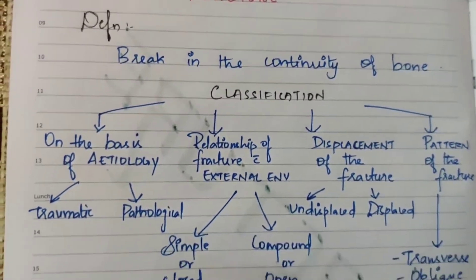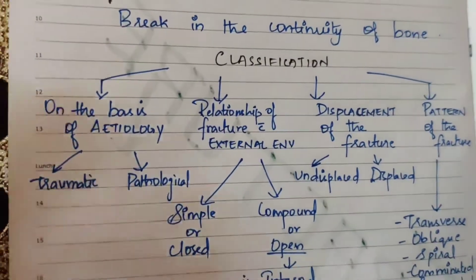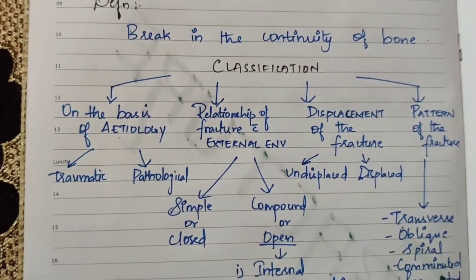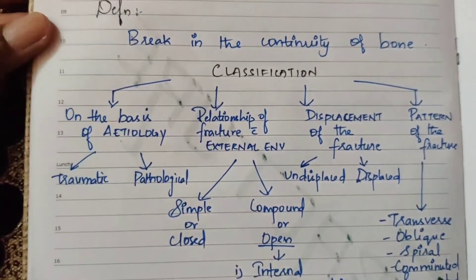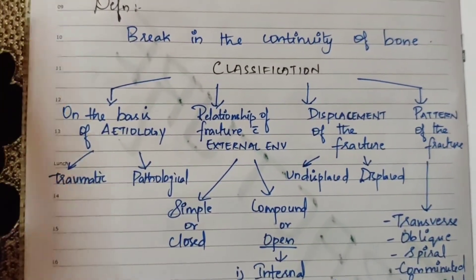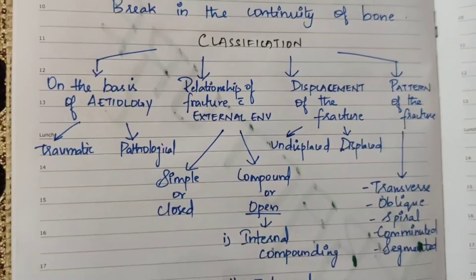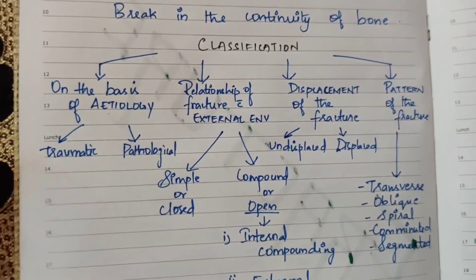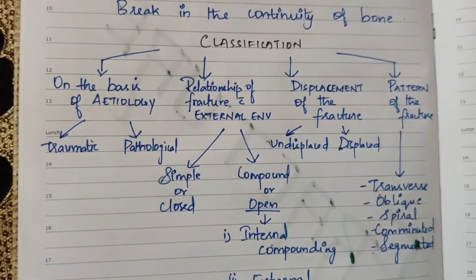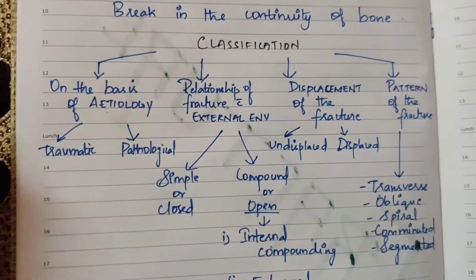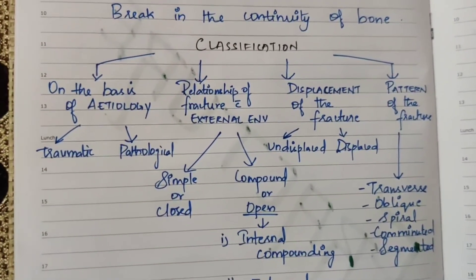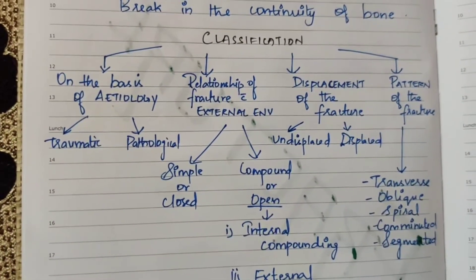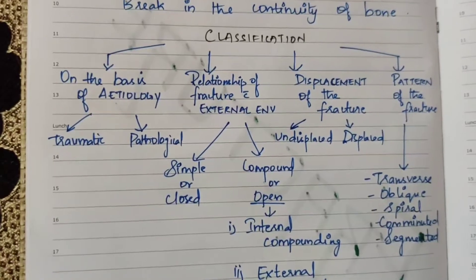Next, classification. Fractures are classified into 4 divisions. On the basis of etiology — cause and reason — fractures are of two types: traumatic and pathological. The second division is based on the relationship of the fracture with the external environment: open or closed.